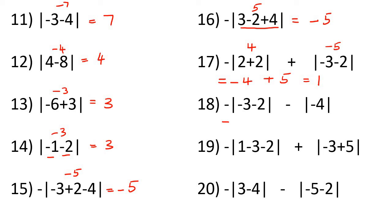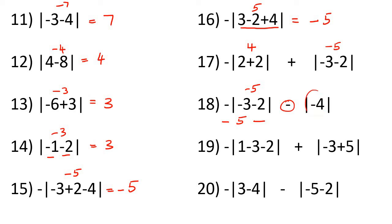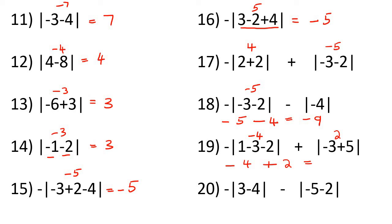For number 18, we have a negative, so we put that there. This is negative 5, but the absolute value of negative 5 is positive 5. Then there's a minus, and this becomes negative 4, but the absolute value of negative 4 is positive 4. So minus 5 minus 4 is minus 9. For number 19, we have a negative out front. That's 1 minus 3 minus 2: 1 minus 3 is minus 2, minus another 2 is negative 4. The absolute value of negative 4 becomes positive 4, plus the absolute value of 2 which stays 2. So minus 4 plus 2 is negative 2.